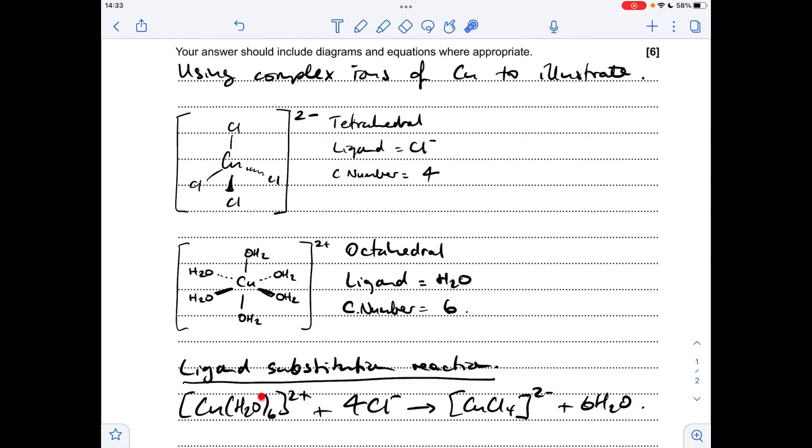So if you take a mole of copper hexa-aqua 2-plus, so the six waters around the Cu²⁺, and react it with concentrated hydrochloric acid, which is a source of Cl⁻ ions, the ligands will substitute. So all six waters are replaced by four Cl⁻ ions.